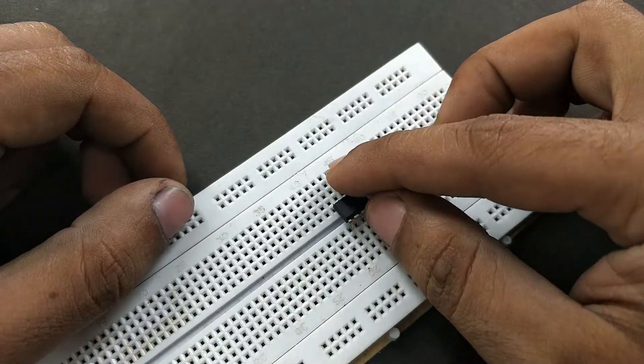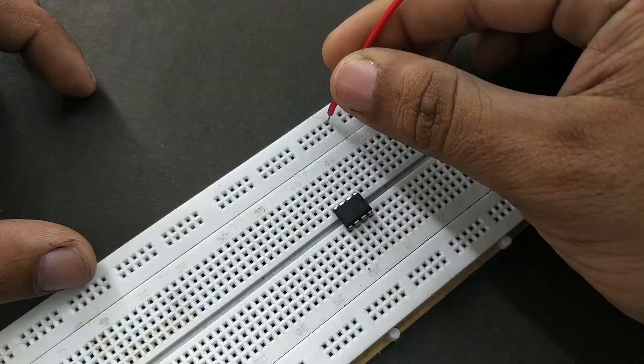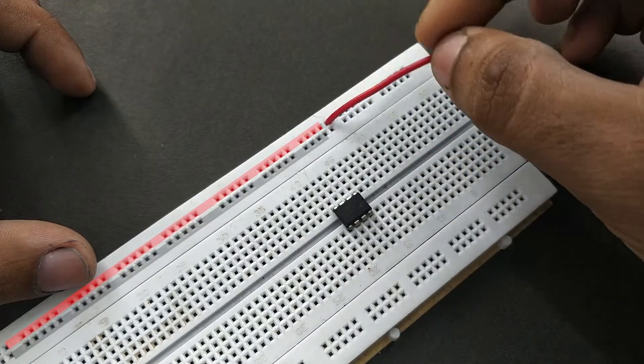So first place the 555 timer IC on the breadboard. And then assign these two outer rows on the breadboard as positive and negative.